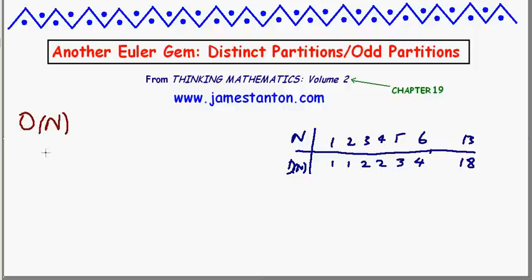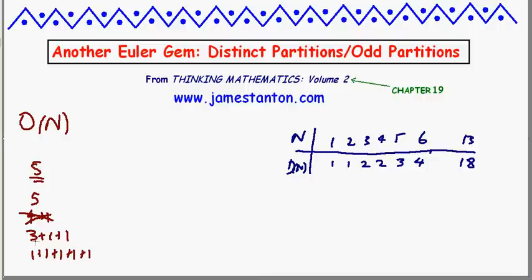O(N) asks: how many ways can we break down the number N as a sum of odds? For example, for 5, if we're only going to allow odd numbers, 5 can be written as 5 itself, or as 3 plus 1 plus 1, or as 1 plus 1 plus 1 plus 1 plus 1. We allow repetitions this time, but all numbers involved must be odd. So there are only 3 ways to write 5 as a sum of odds.